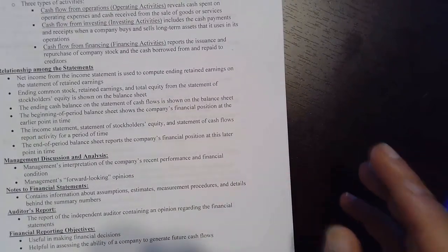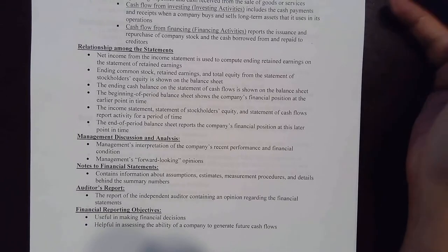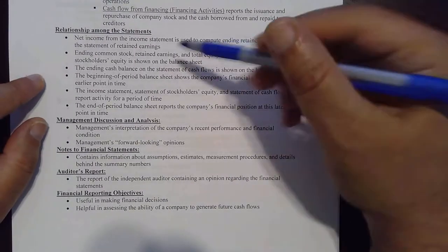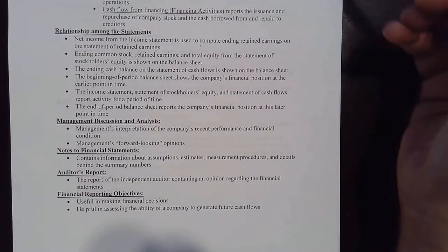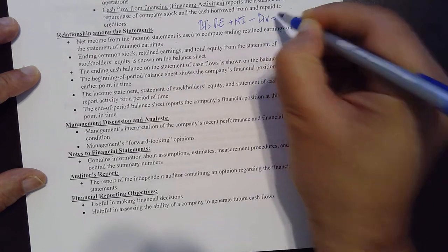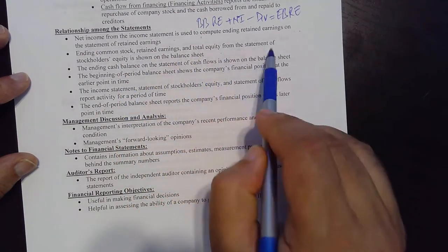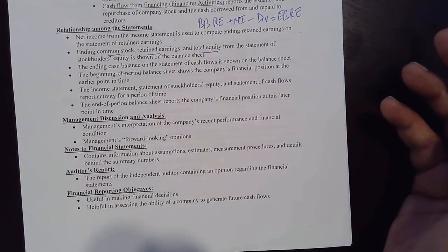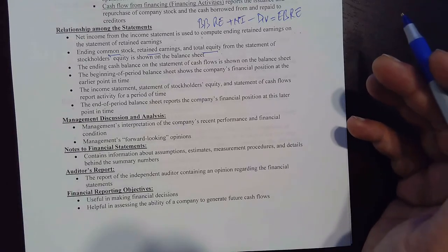For financial statement analysis, we need to understand the relationship among all the statements. First, net income from the income statement is used to compute ending retained earnings: beginning retained earnings plus net income minus dividends equals ending retained earnings. The ending common stock, retained earnings, and total equity from the statement of stockholders' equity are then shown on the balance sheet, since those are all permanent balance sheet accounts with beginning and ending balances.